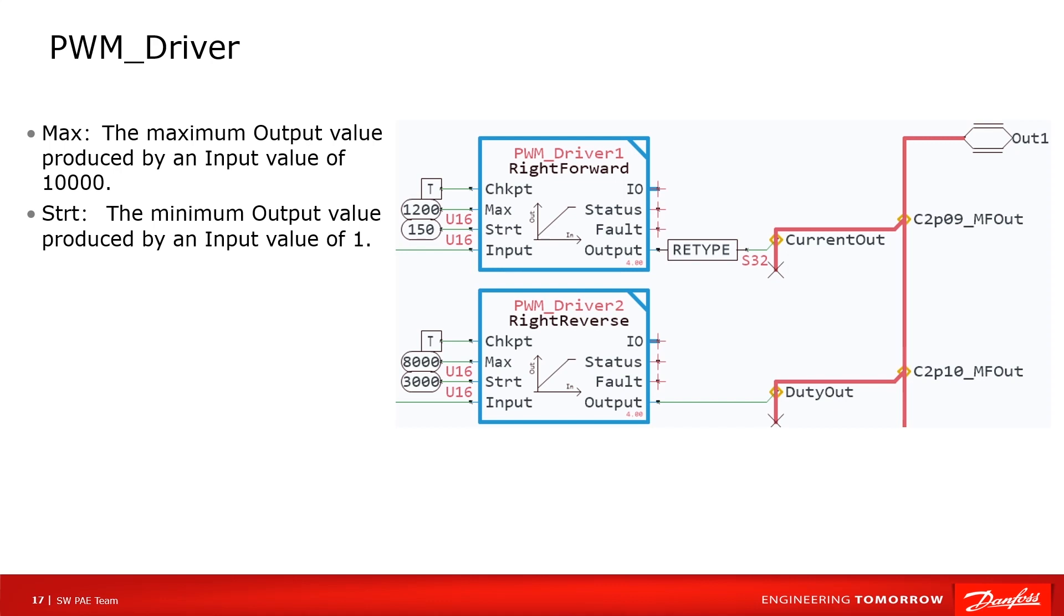Max is the maximum output value when input value is 10000. And start is the minimum output value when input value is 1. The range of output is from 0 to 30000.